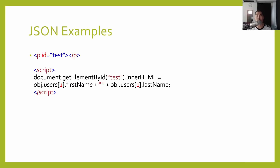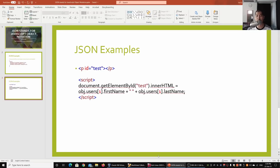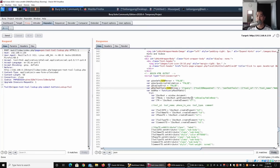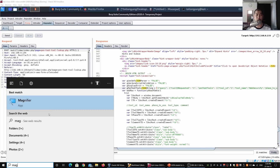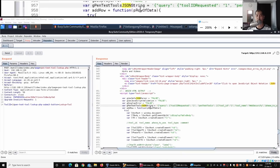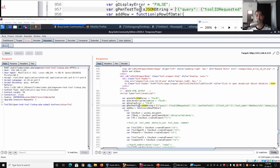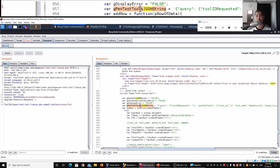In the JSON example, we have document.getElementById - we have the object users and then the first name, listing down the columns in each object, one for each row. Going back to Kali Linux, we can see the g_pen_test_tools_json_string with the corresponding values inside it, represented exactly this way.